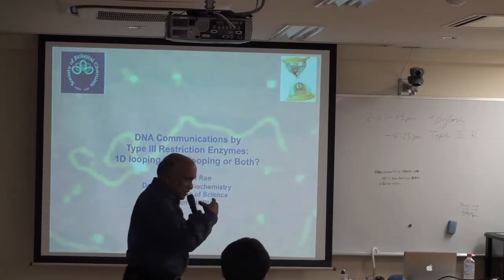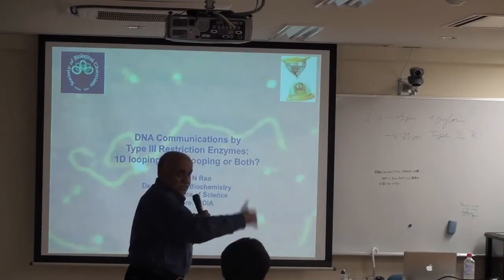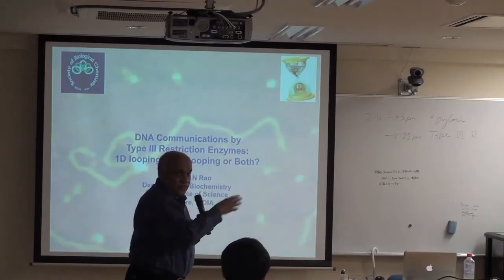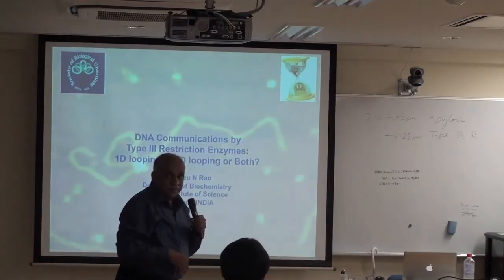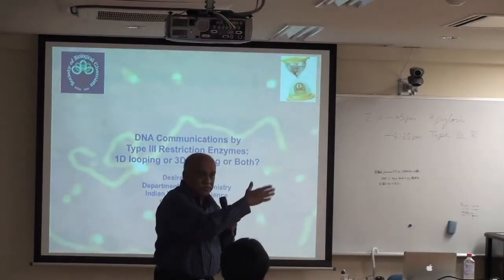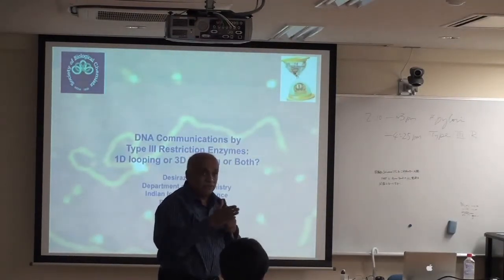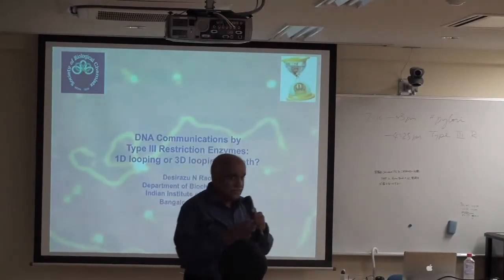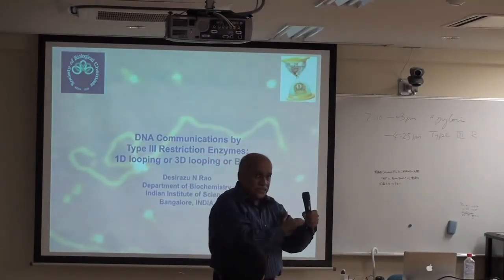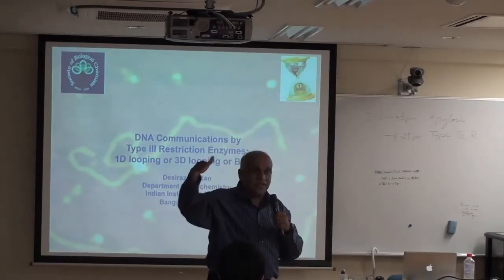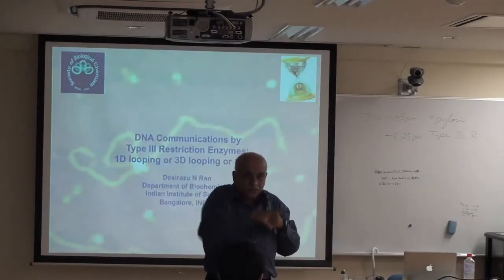For example, EcoRI recognizes GAATTC and cuts between G and A. Whereas type 3 enzymes cut 25–27 base pairs away. Type 2S enzymes like FokI cut 14–12 base pairs away, and type 2G enzymes cut 15–17 base pairs away. Looking at all restriction enzymes, there is a whole continuum — some cut within the sequence, others cut 1, 2, 4, 5, 6, 10, 14, or even thousands of base pairs away.